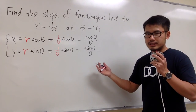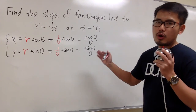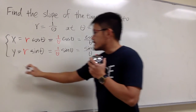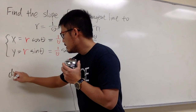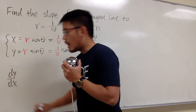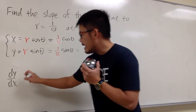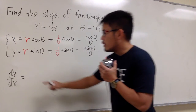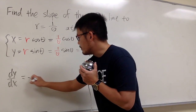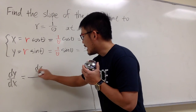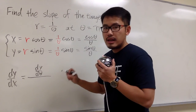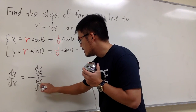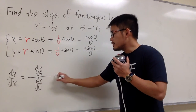The purpose of doing so is that we can now find the slope of the tangent line to the parametric equation. The slope of the tangent line is dy/dx, and by looking at the parametric equation, we know to get dy/dx we first need dy/dθ and then divide it by dx/dθ.